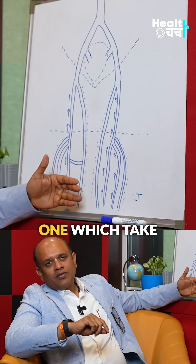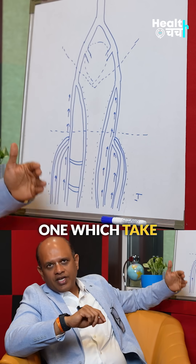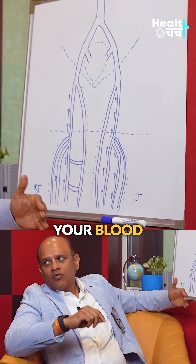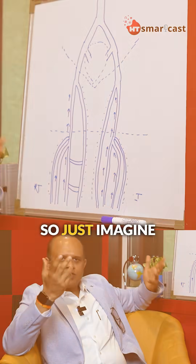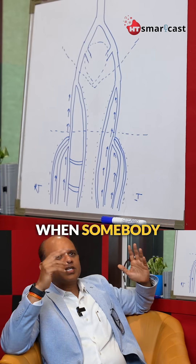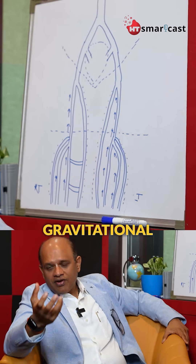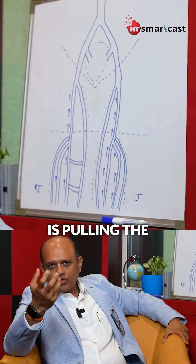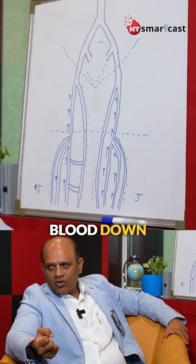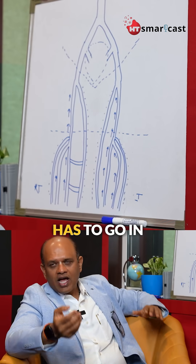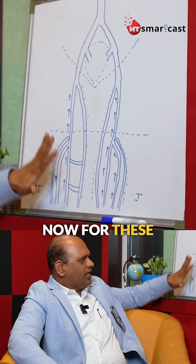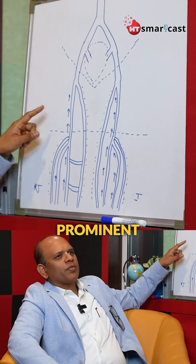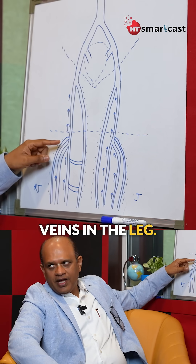Veins are the ones which take your blood from your leg towards your heart. So just imagine when somebody is standing, there is a gravitational force which is pulling the blood down and the blood has to go in a reverse direction towards the heart. Now for this, there are two sets of prominent veins in the leg.